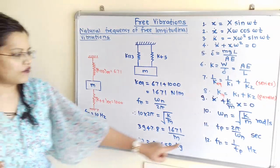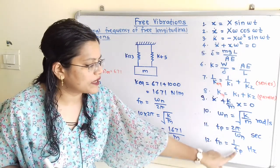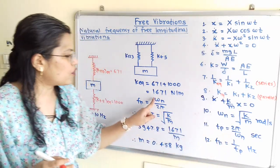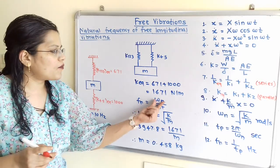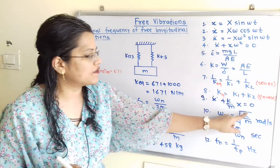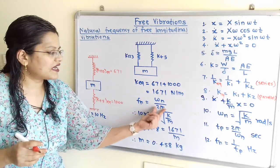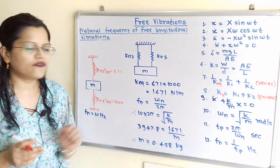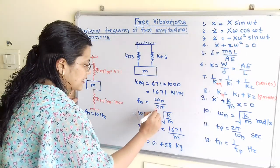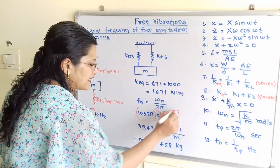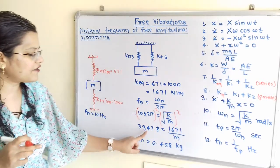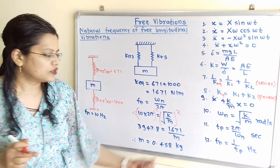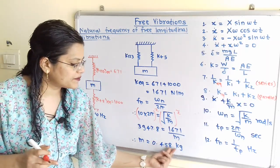Now using the natural frequency formula: fn equals omega n by 2 pi, and omega n equals under root of k by m. Transferring 2 pi to the left: 10 into 2 pi equals under root of k by m. Squaring both sides: 3947.8 equals k divided by m, where k is 1671. Therefore m equals 1671 divided by 3947.8, giving m equals 0.458 kilogram.